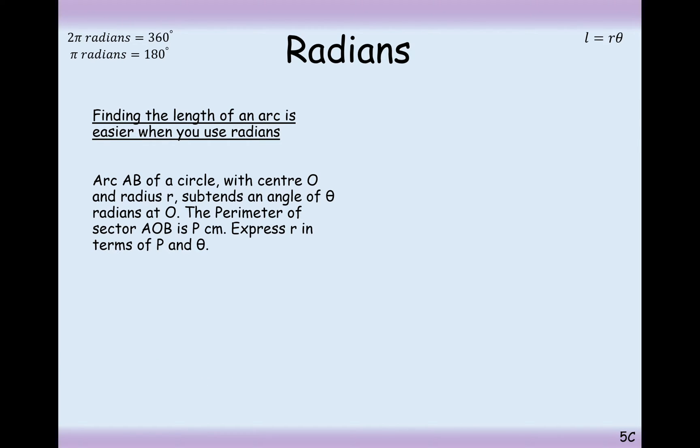Different question here. Arc AB of a circle is centre O and radius R subtends angle of theta. The perimeter of the sector AOB is P. Express R in terms of P and theta. Let's draw ourselves a diagram to visualise this. We've got a circle radius R. The angle is theta. And the length from A to B going round the arc is P. So, P is equal to R theta. But it's the whole perimeter. So, it's not just this R theta here. We need two more R's as well to be added on.